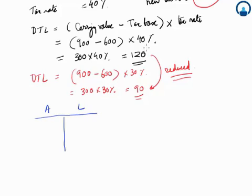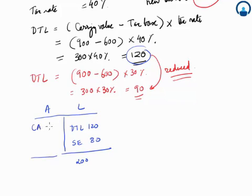There's an asset and the liabilities. Here the deferred tax liability was 120. Let's assume that the other set of liability, that is shareholders equity, was 80. So the liabilities is 200 here. And let's assume that current asset is 50 and the fixed assets is 150, so total assets are equal to total liabilities.